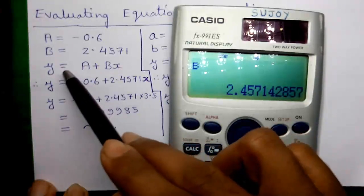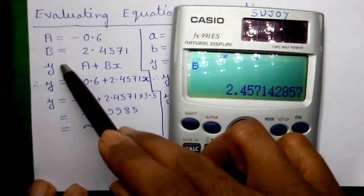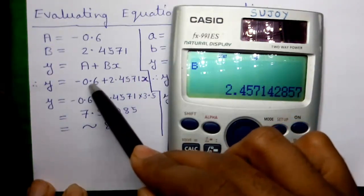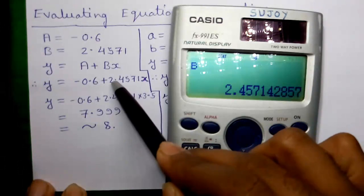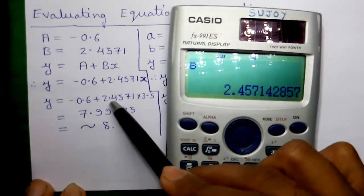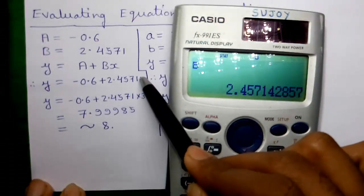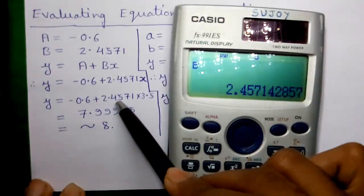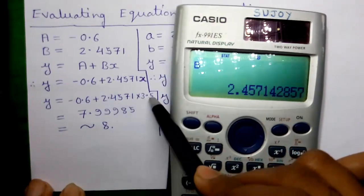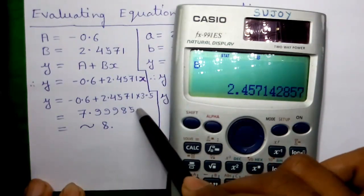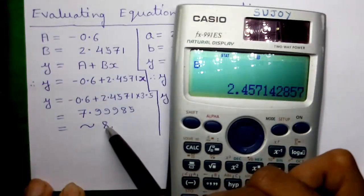So we know the values of A and B. The equation of the line is given by Y = A + BX, that is Y = −0.6 + 2.4571 × X. And now we have to find the value of Y for X = 3.5. If we put X = 3.5 into the equation, that is −0.6 + 2.4571 × 3.5, we will get 7.99985, which is nearly equal to 8.